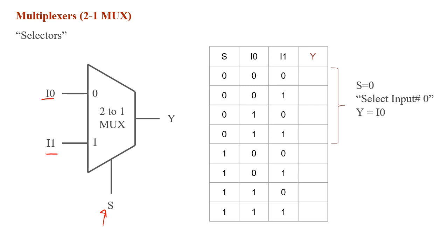Here you see the truth table of a 2-to-1 mux. You have two inputs — this is the first input and this is the second input — and we also need an additional input named s, the select bit. Based on the value of s, we're going to either select input 0 or input 1.